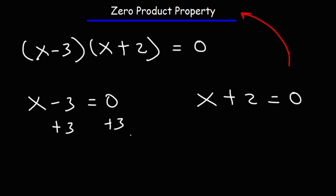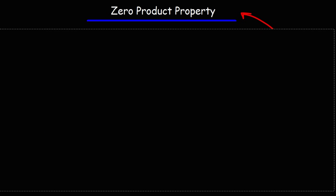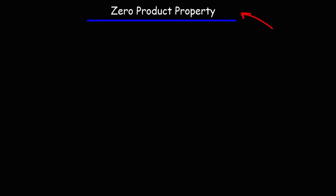Once we have these two equations, we can solve them. For the first one, we add 3 to both sides and get X equals positive 3. For the second one, we subtract 2 from both sides and get X equals negative 2. That's one of the applications of the zero product property — it's very useful when solving quadratic equations, especially when factoring.